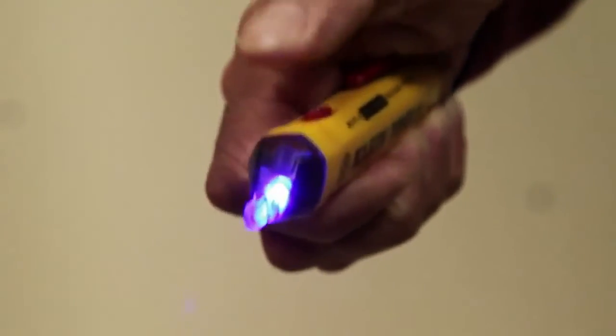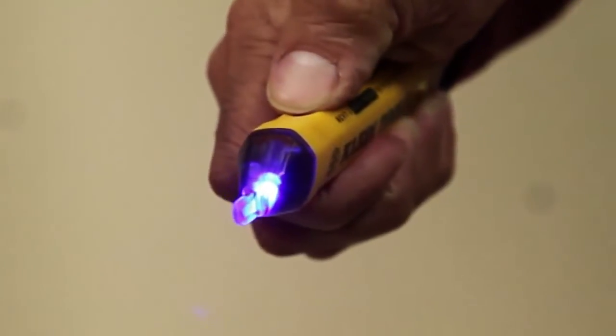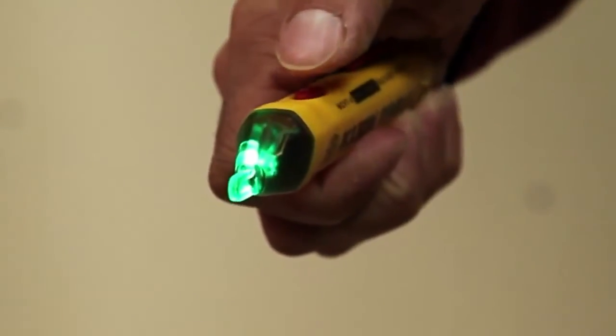When the blue LED light is illuminated, the NCBT2 is in dual range mode and can automatically detect both standard and low voltages.